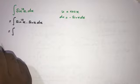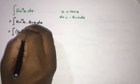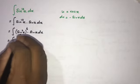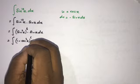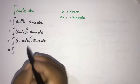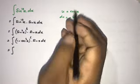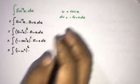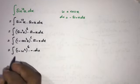We rewrite sine to the 12th power of x as (sine squared of x) to the sixth power, times sine of x dx. We know sine squared of x equals one minus cosine squared of x, so this becomes (1 minus cosine squared x) to the sixth power times sine of x dx. Substituting, cosine squared x becomes u squared, and sine of x dx equals minus du.